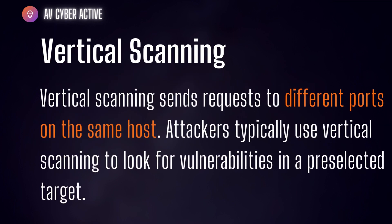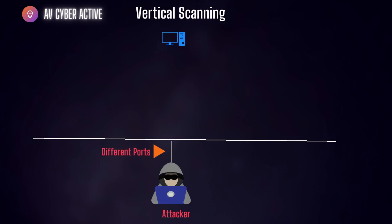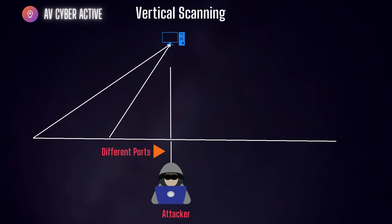In the case of vertical scanning, the attacker sends requests to different ports on the same host. Attackers typically use vertical scanning to look for vulnerabilities in a pre-selected target device. Since the target device in vertical scanning is just one device, hence the term vertical scan — the attacker sends scan requests to different ports but to the same host. This gives the attacker enough information on the services that are open on a particular machine, and then they plan the next stage of their attack.